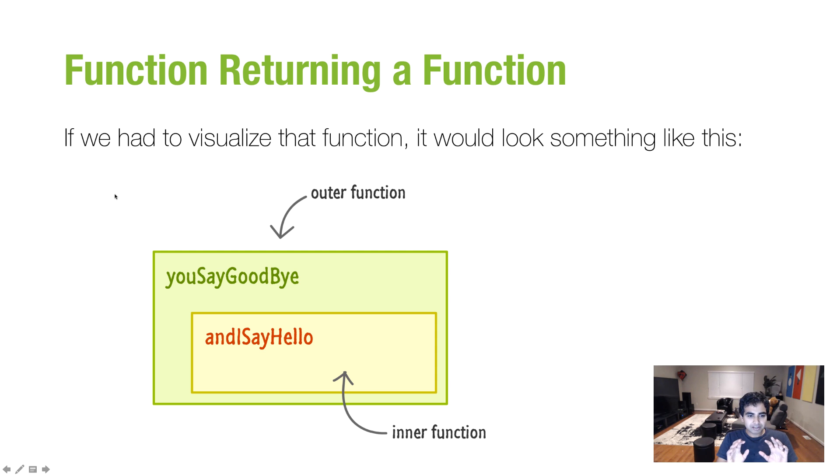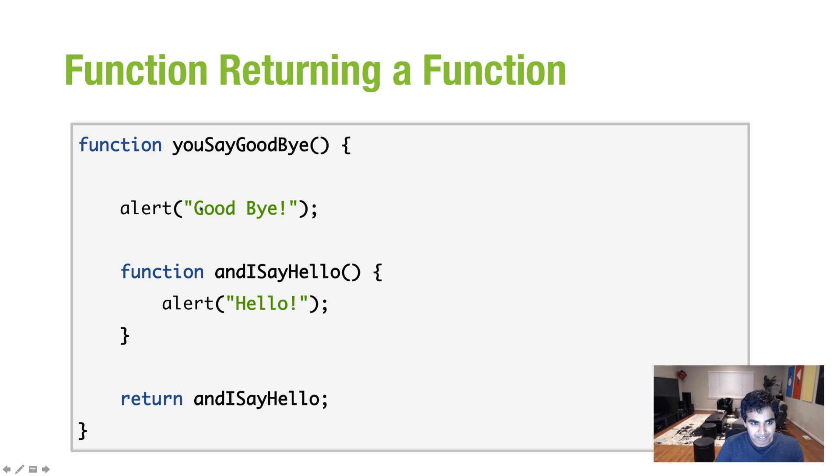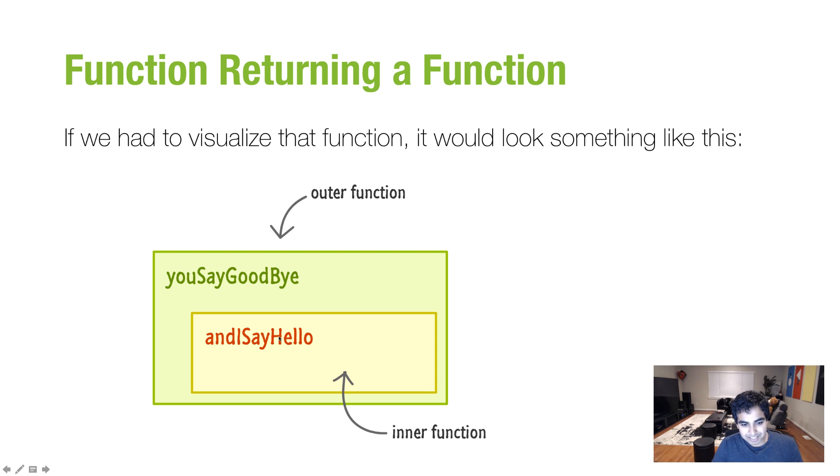I have a function called andISayHello, which has an alert statement by itself inside it. And the last thing the youSayGoodbye function does is returns the value of andISayHello, which in this case is a function by itself. So take a moment to look at what this code does. And if you look at it, here's what happens. So let's say you want to visualize what this function is doing.